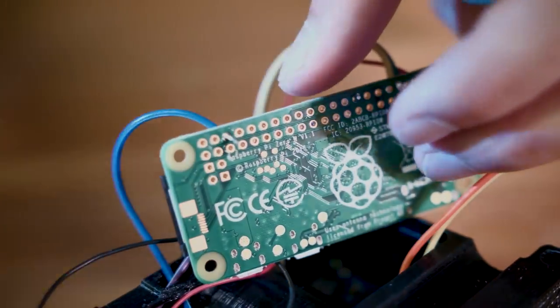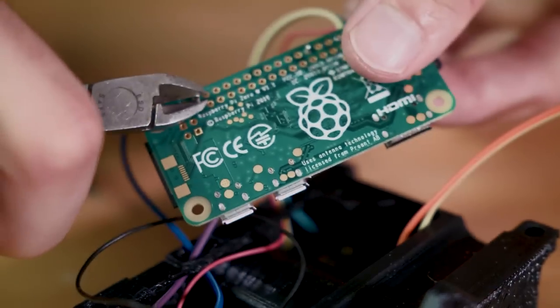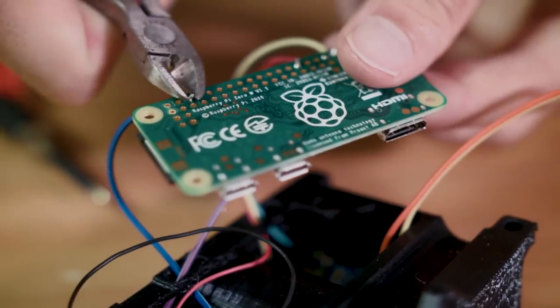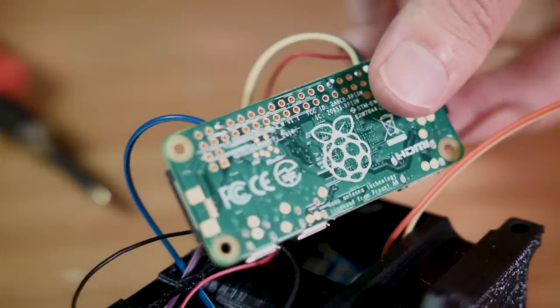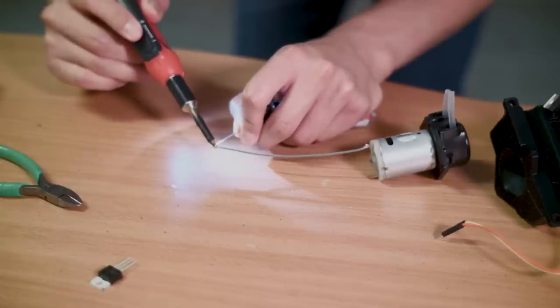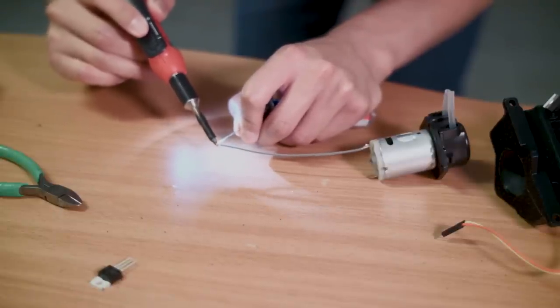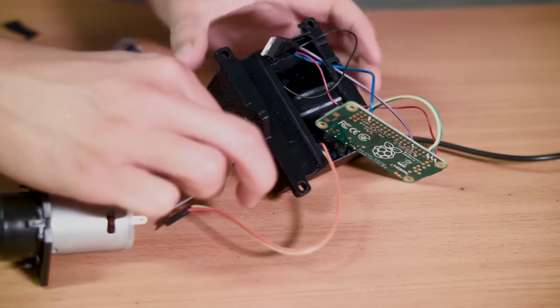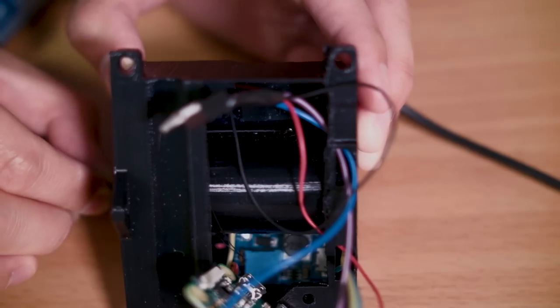The MOSFETs will be used as switches for the external components. When the gate pin is pulled high, the drain and source will be connected and turn on the light. Next we soldered a ground wire to our pump. The wire was then fed through the opening in the back of the slot for the pump.